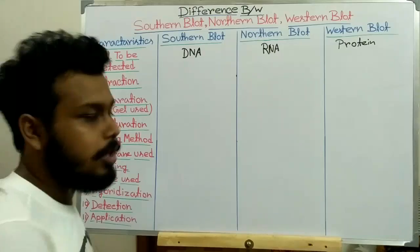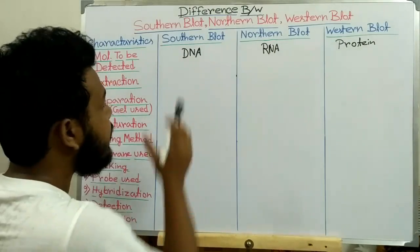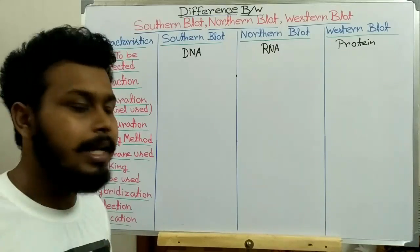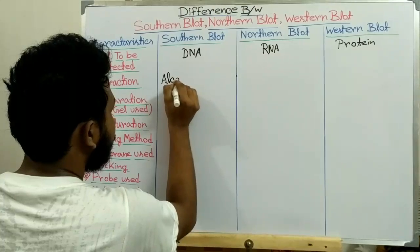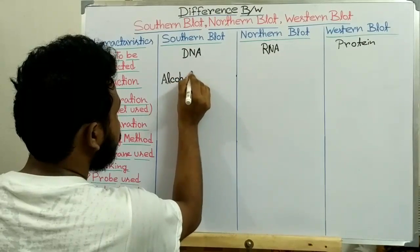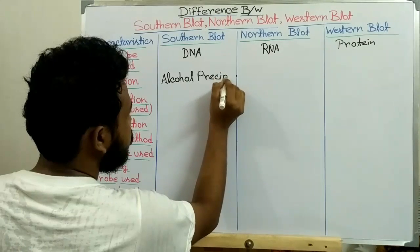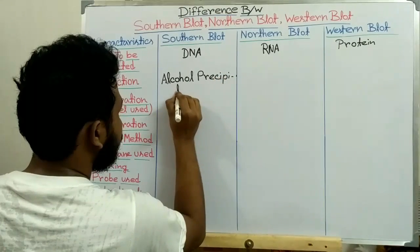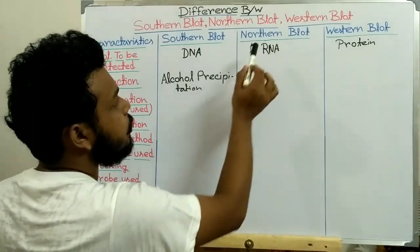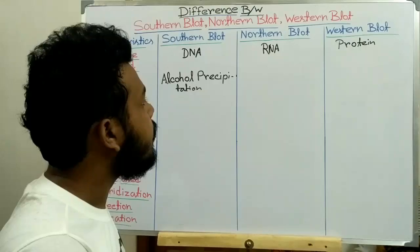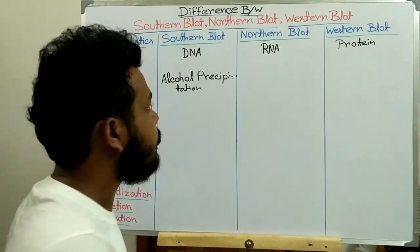The next point is extraction — how we extract these biomolecules. In Southern blot we extract and purify DNA from the cell by alcohol precipitation technique. In Northern blot we extract RNA by cellulose chromatography.